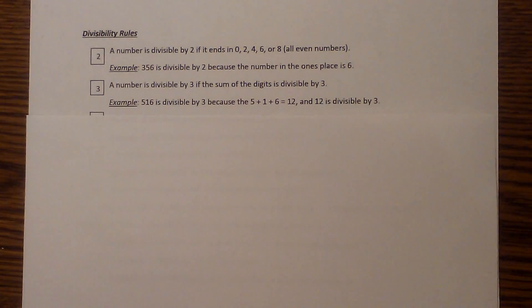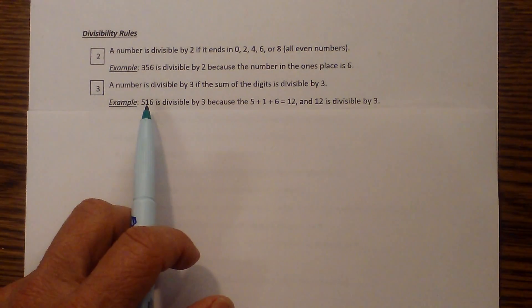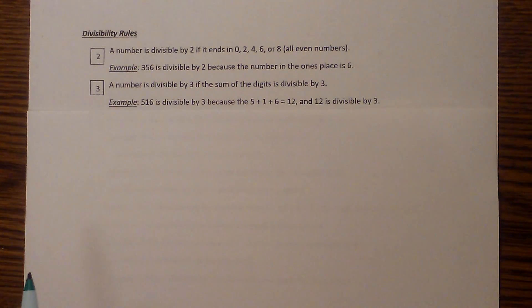A number is divisible by 3 if the sum of its digits is divisible by 3. So 516: 5 plus 1 plus 6 equals 12, and 12 is divisible by 3.